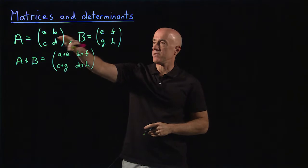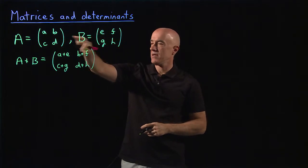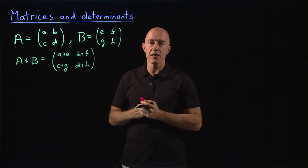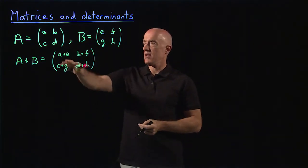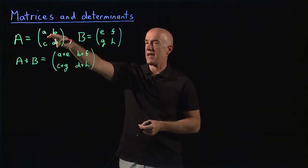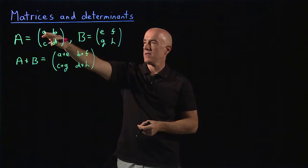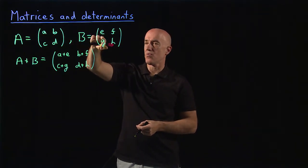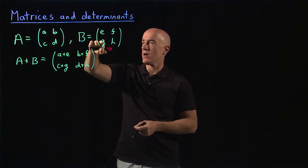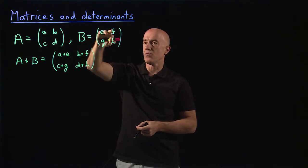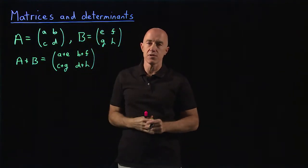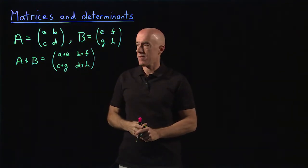They have to be the same dimension. Here we're talking about two by two matrices, and you just add them — row one column one to row one column one, row one column two to row one column two, et cetera.